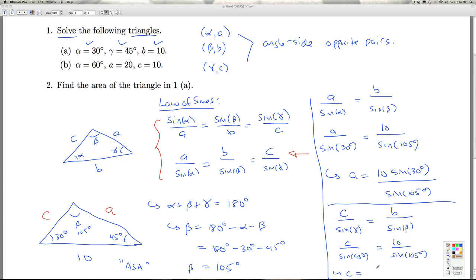So that gives us C equals 10 sine 45 degrees divided by the sine of 105 degrees. All right, so those are the exact answers for A, C, and beta.